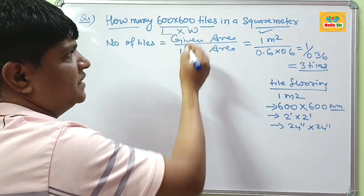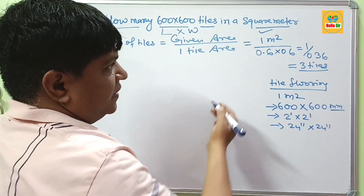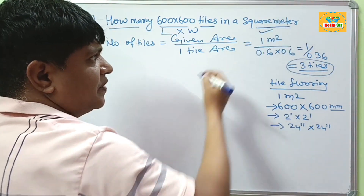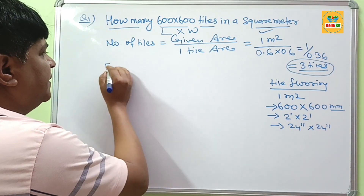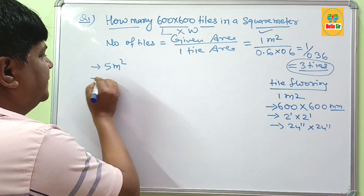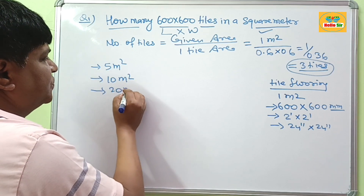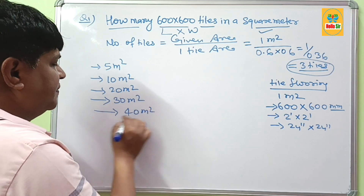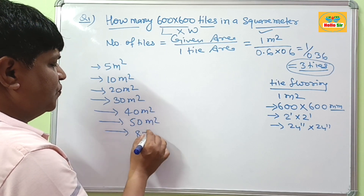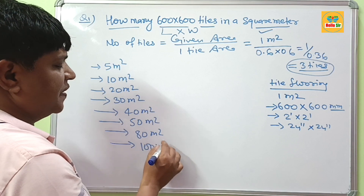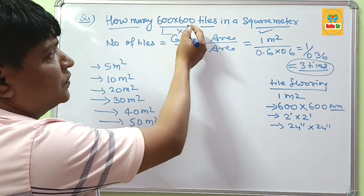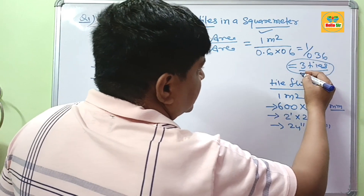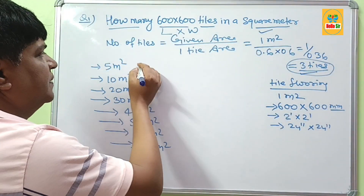It means if we are using 600x600mm tiles for your tile project, you will require on average about 3 tiles for one square meter area. Now if your area is given as 5, 10, 20, 30, 40, 50, 80, or 100 square meters, how many 600x600 tiles will be required? You have 3 tiles per square meter, so for each area you divide by 0.36.